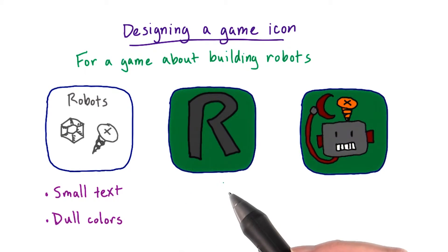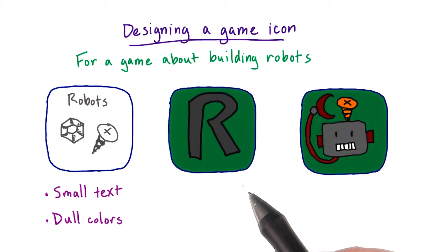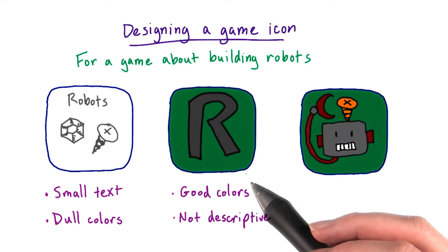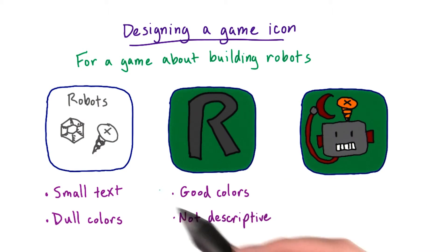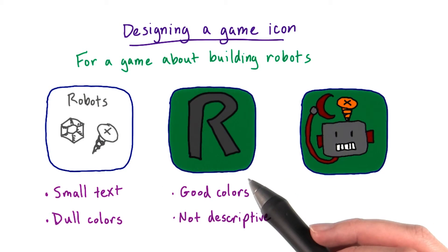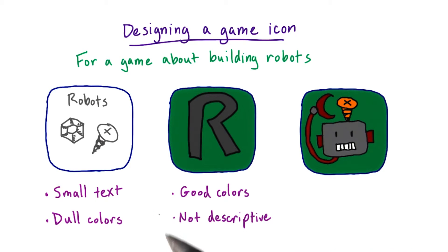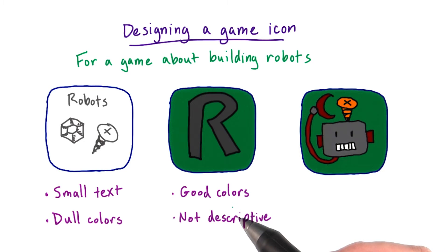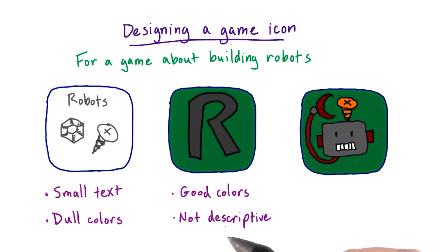The second is a picture of a large R. This one is readable and has a nice, bold, green background, but it doesn't really tell me what the game's about. Labels like this work for established brands — think of the Facebook F — but otherwise, a person browsing will want more information.